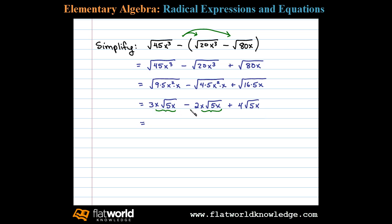3x√5x minus 2x√5x is 1x√5x, and then we'll write plus 4 times the square root of 5x. x√5x plus 4√5x, and this expression is completely simplified.